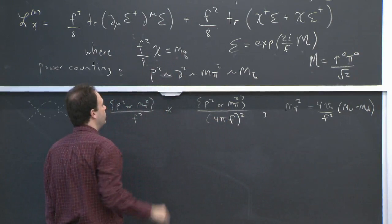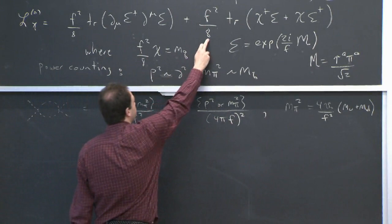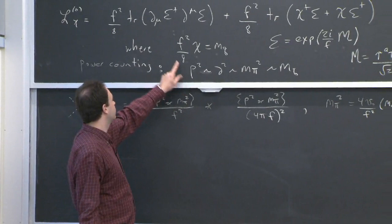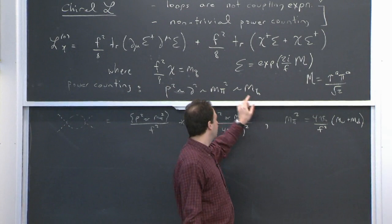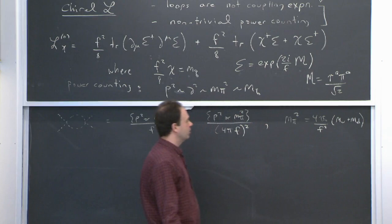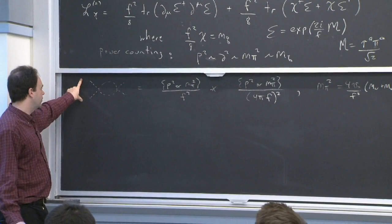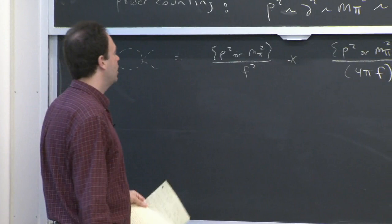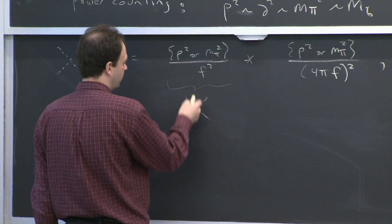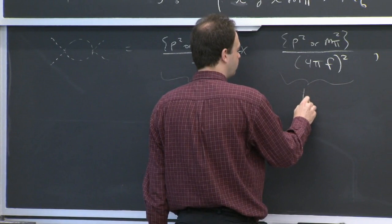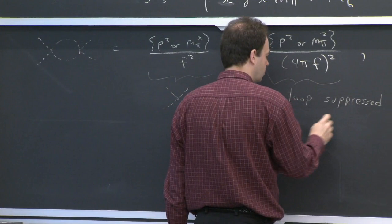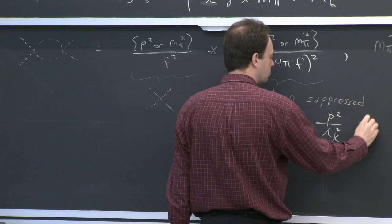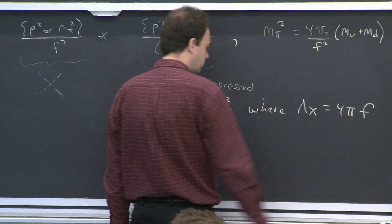The power counting is in p squared derivatives or M_pi squared, which is the same as M_q. The reason M_pi squared and M_q count the same is this relation between M_pi squared and the quark masses. Looking at this loop, the result would be a factor of p squared or M_pi squared times p squared or M_pi squared divided by 4π f. This is the same size as the lowest order, so the suppression factor is that ratio.